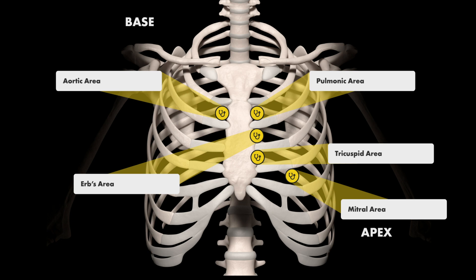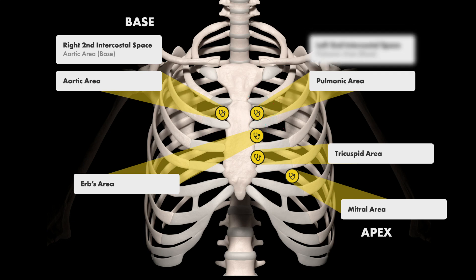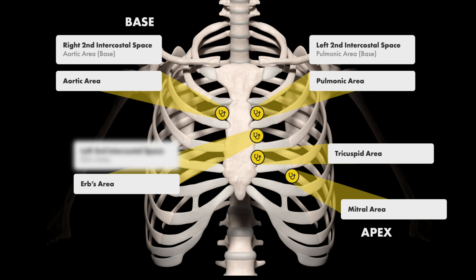The difference is that instead of referring to this area as the aortic area, you report it as hearing a sound at the right sternal border at the second right intercostal space; the pulmonic area as the second left intercostal space; and Erb's area located at the third intercostal space at the left sternal border.